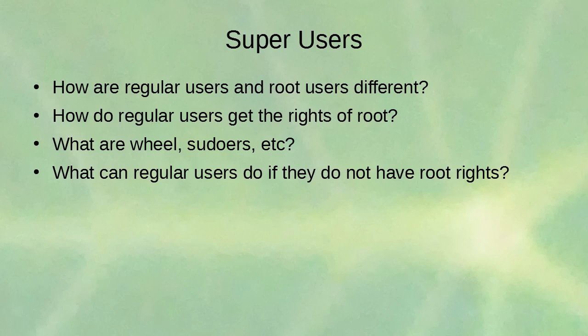Root users have access to all kinds of things — they can edit any file, change permissions, and change ownership of any file. Regular users can get root-like rights through the wheel group and sudoers, allowing them to run commands with `sudo`. If a regular user doesn't have root rights, they can ask someone with root access to do it for them, or root can grant them access via the sudo command.